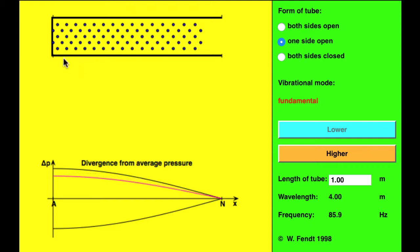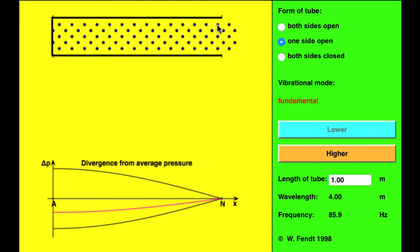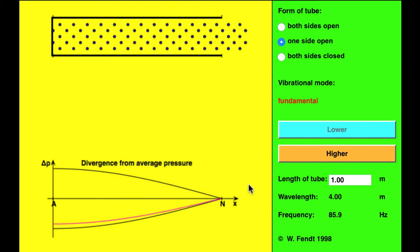Now when we open up one side, the closed end, as we said, always has an antinode, and the open end is always a node.